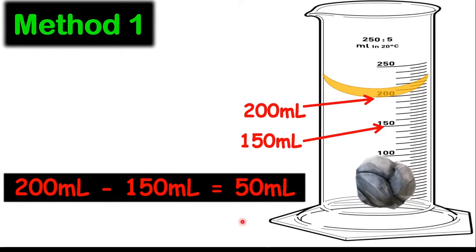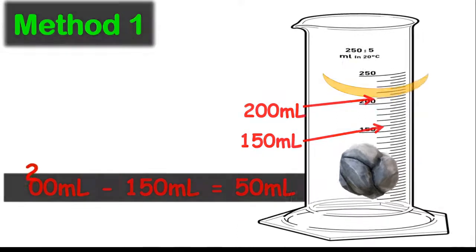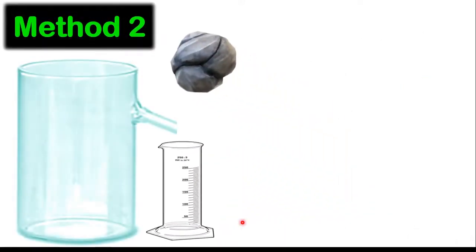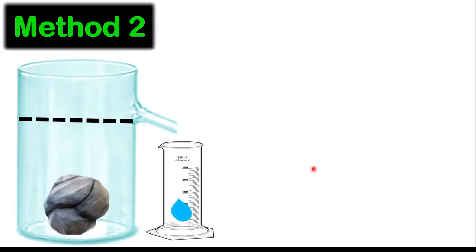Now, our method two will be now, we use a displacement can or what we call a Eureka can. What we want to do first is to pour liquid into this can to make sure that the liquid will be at a level that all the liquid will start running out and then stop. After that, you'll place your measuring cylinder under that can and then you want to insert your object. And notice once you insert the object, then liquid will start to flow out of that can.